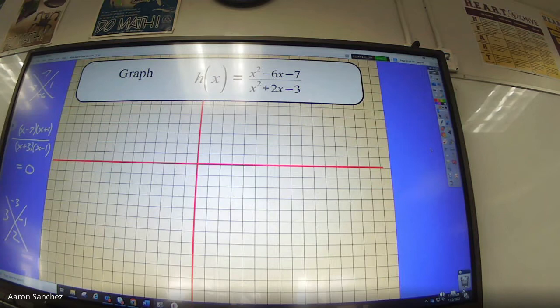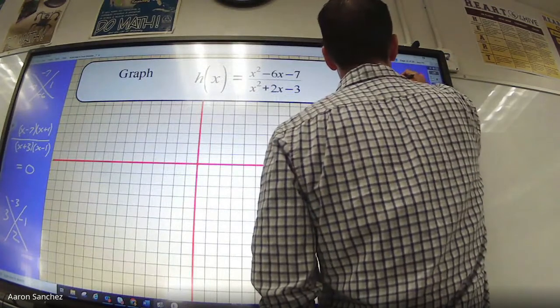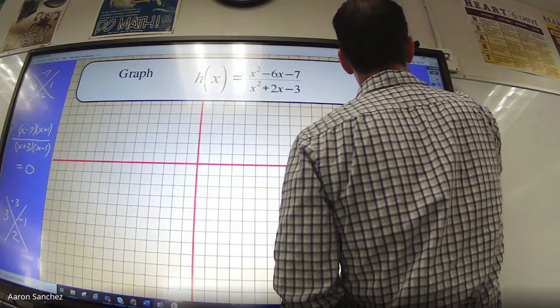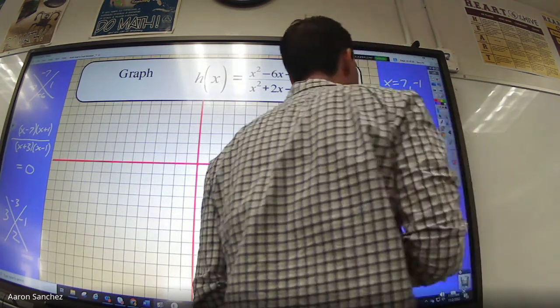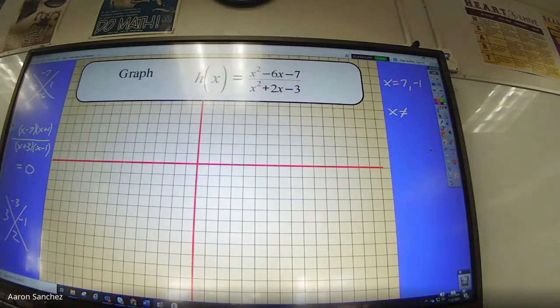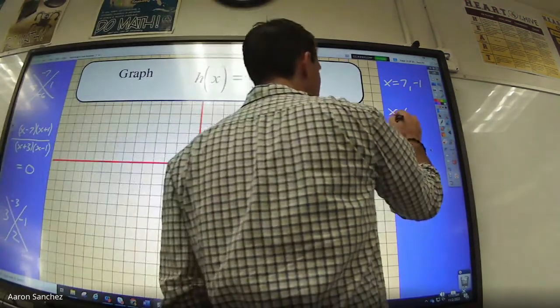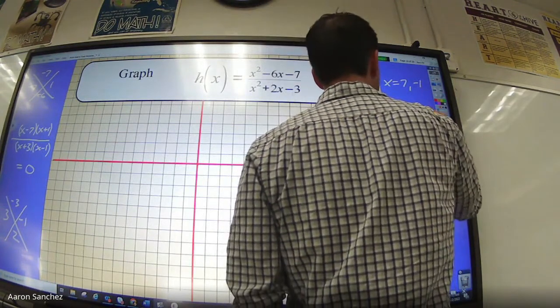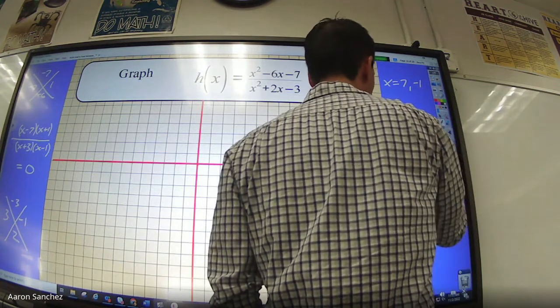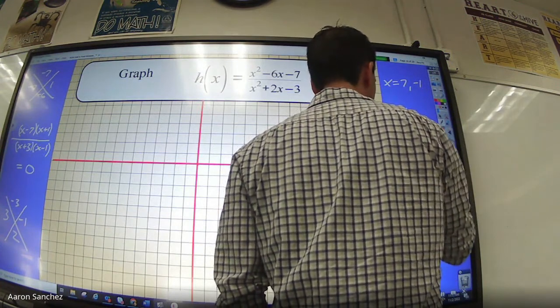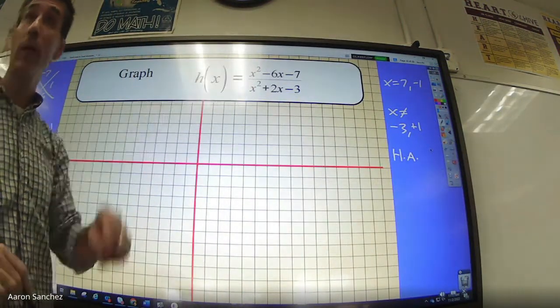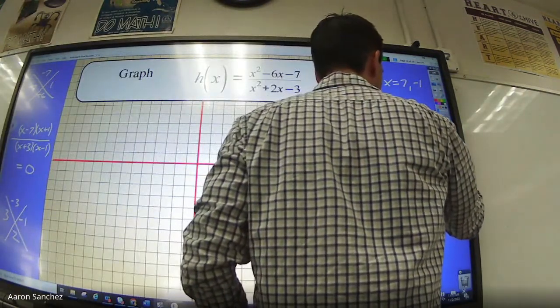What's the next step? Find the zeros. So I'll do that over here. X equals 7 and negative 1. What's my vertical asymptotes? Negative 3 and positive 1. Then let's do the horizontal asymptote. M is equal to N, so it's 1 divided by 1, so it's equal to 1.